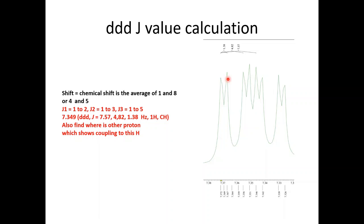1 to 2 is smallest J value. 1 to 3 is second J value. 1 to 5 is the third J value. You can take from this side, 1 to 2, 1 to 3, 1 to 5 and match the J value with other peaks.